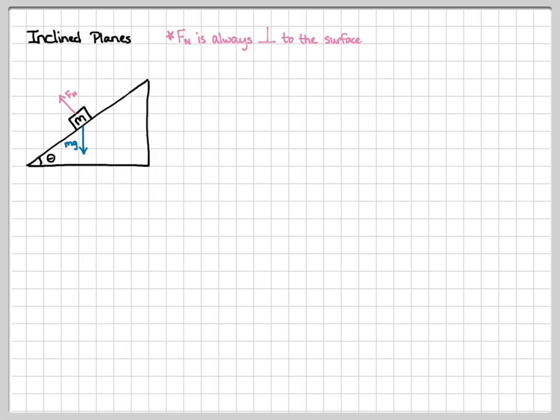So if the surface is at an angle, the normal force is also going to be at an angle. This block is going to slide down the ramp with acceleration a. And so if you notice, the acceleration isn't in the purely x or purely y. It's also at an angle.